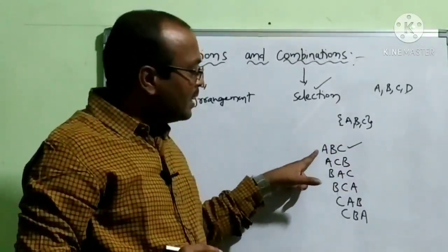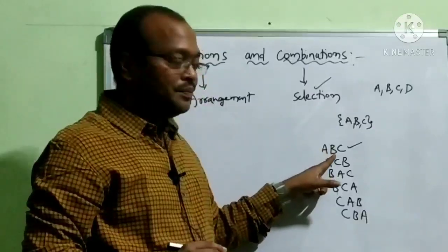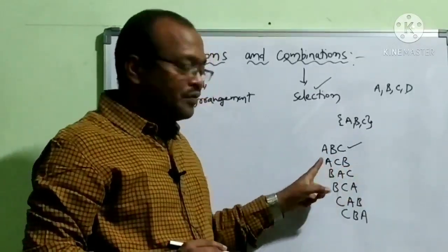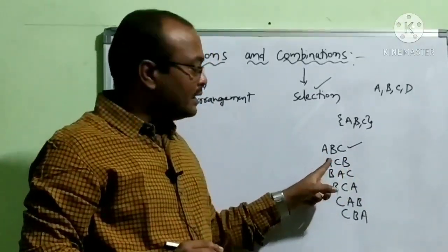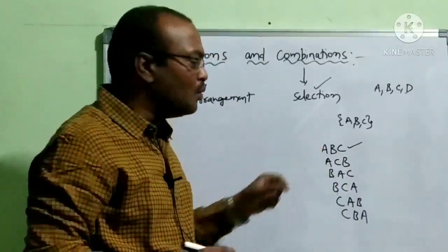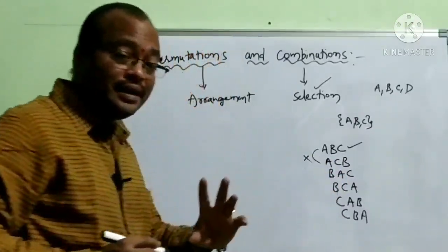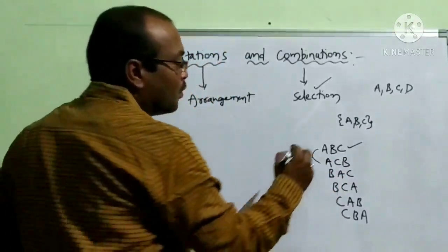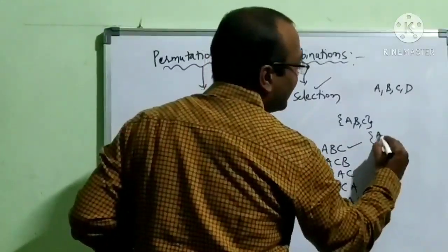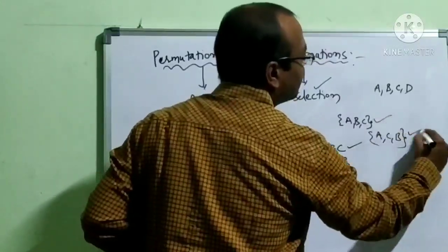In A, B, C: the first position is A, second position is B, third position is C. In A, C, B: first position is A, second position is C, third position is B. It means these two arrangements are different — they are not the same, because the positions of the letters differ.